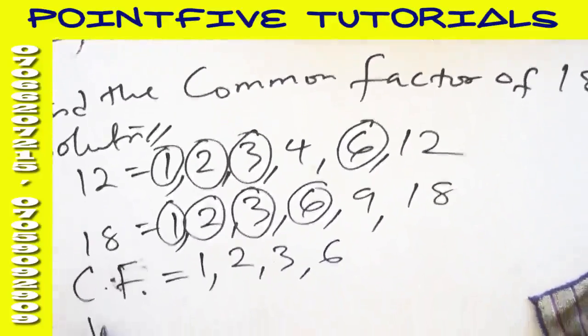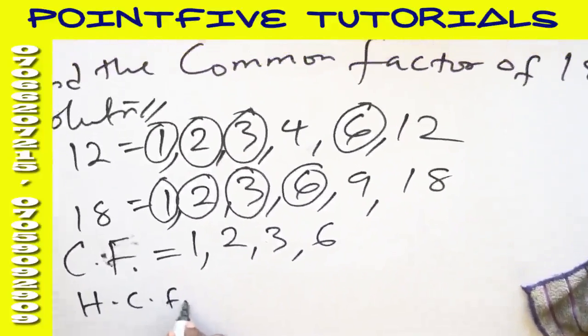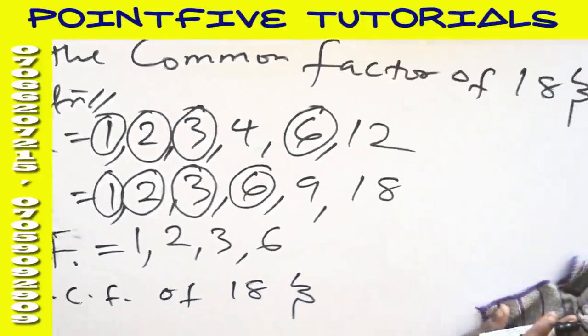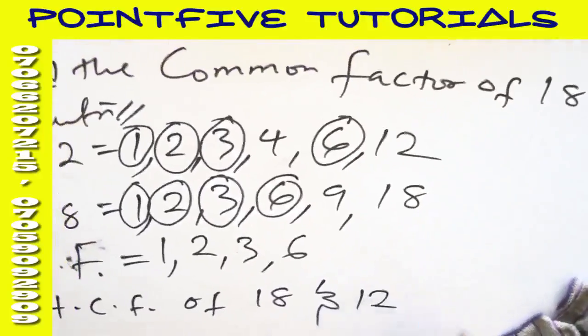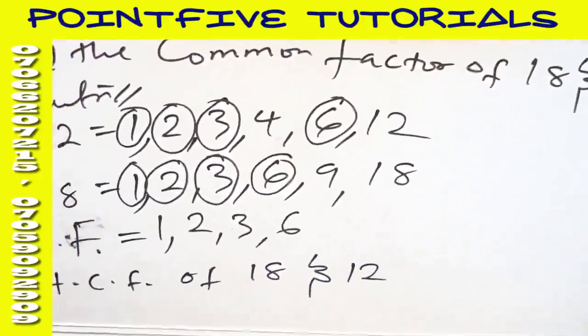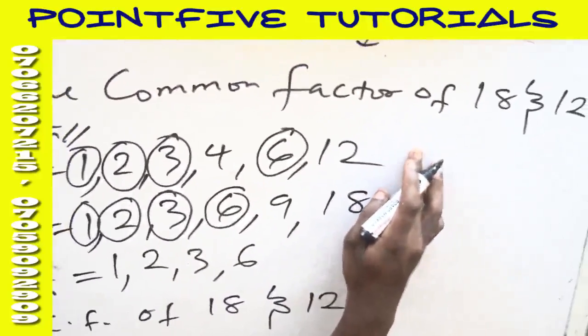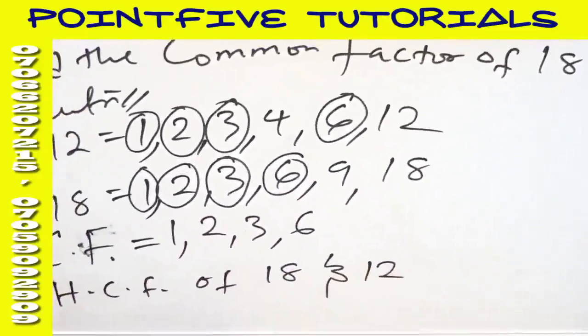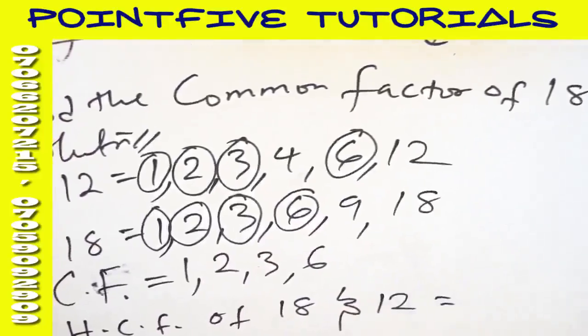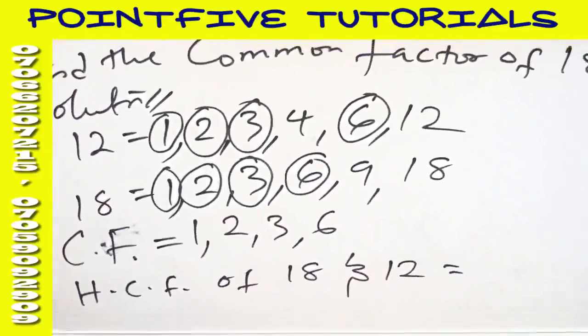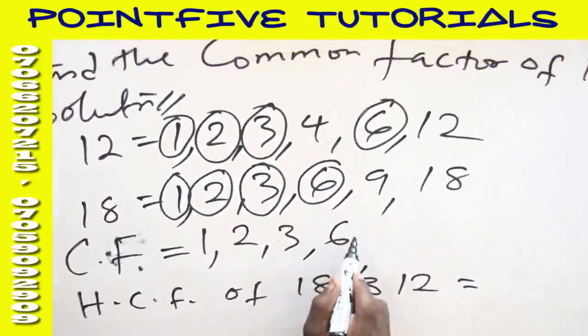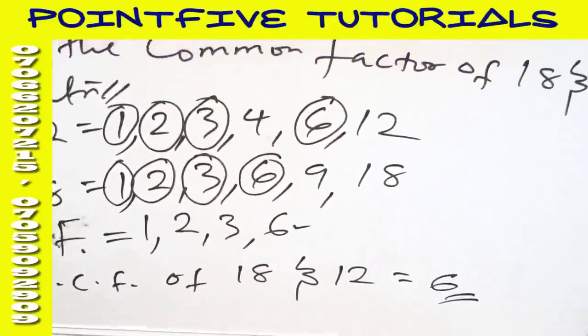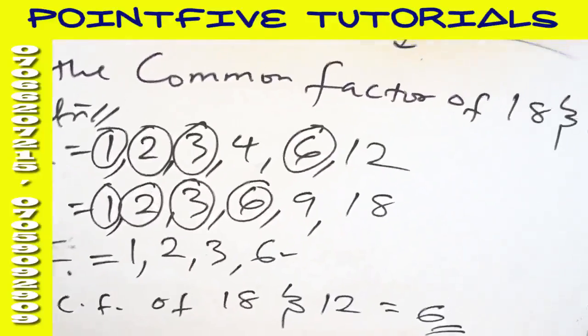Now suppose here I am to find the HCF of 18 and 12. All you need to do after finding the factors, you go on to find the common factors. Then from the common factors, you check the number that is the biggest. Here the biggest is 6. So 6 is nothing but the HCF of 18 and 12.